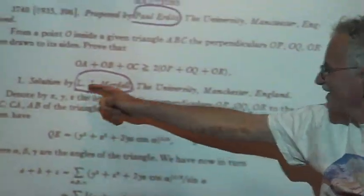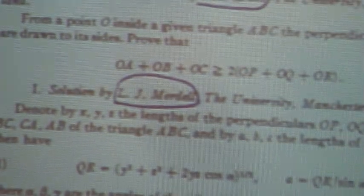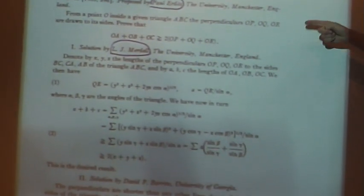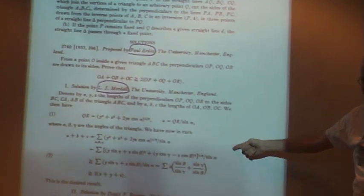Erdős also loved geometry. And he was not a snob. He loved simple-minded problems in geometry. And in those days, people were not... Mordell, one of the greatest number theorists of our century, did not think it would be beneath him to send a solution to the Monthly of a simple-minded, almost high school algebra, high school geometry problem, using very elementary tricks. So I admire these people. I don't think today a famous mathematician would bother to send a solution to such a problem. People loved mathematics in those days for its own sake, regardless of what it is.